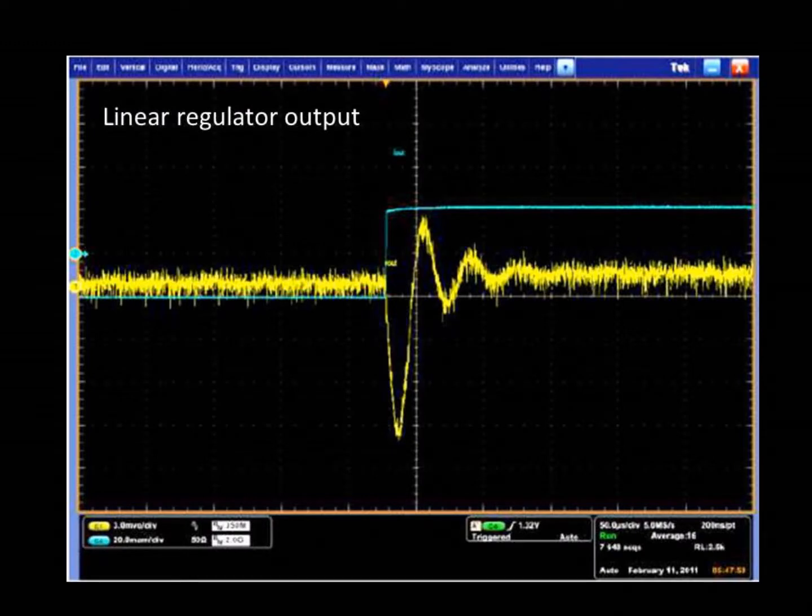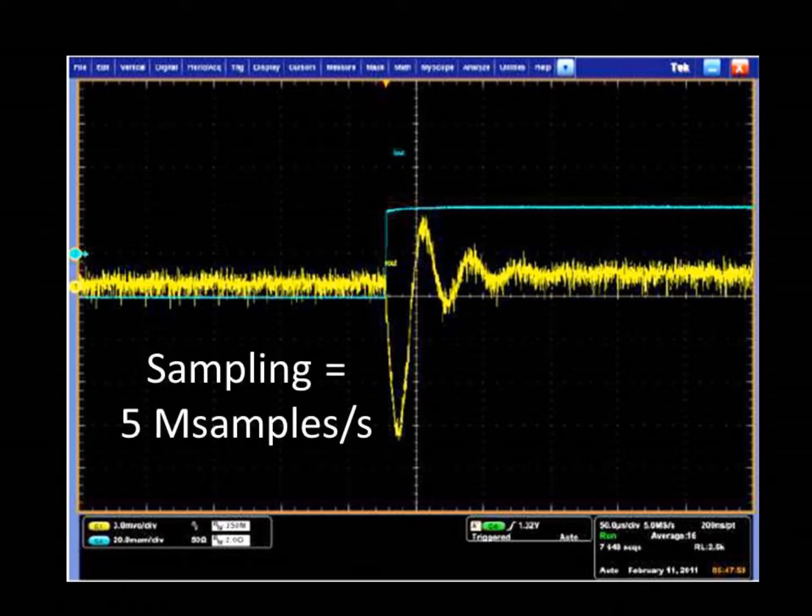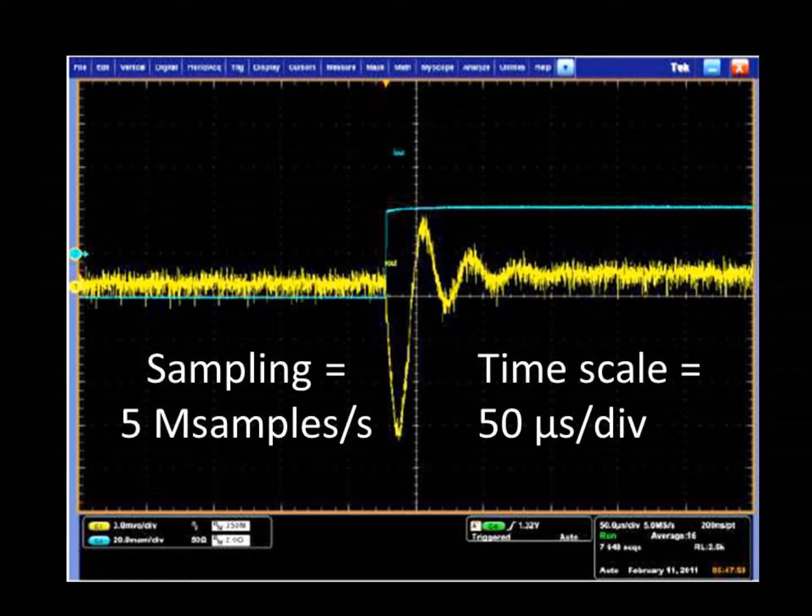Here is yet another image showing a measurement of the output voltage of a linear regulator on a somewhat higher performance scope, a Tektronix MSO5104. We can clearly see the step load response and ringing, indicative of poor stability margin. We are sampling at 5 ms per second, which is reasonable for the 50 ms per division time scale and the limited memory we have in the scope.